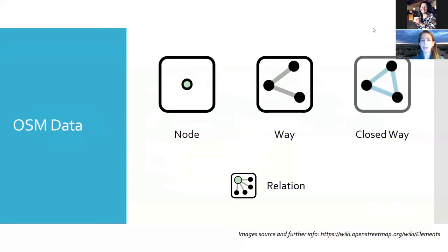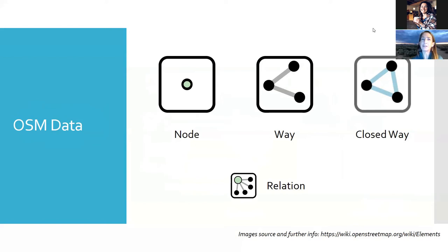So, OSM data — these are some images from the OSM wiki, which is amazing. Go in there, there are answers to all of your questions. If we're used to thinking about points, lines, and polygons in other geospatial data formats, OSM data comes in nodes, and then nodes related together make a way. Those can be a closed way, or a solid closed way to become a polygon. So it's a slightly different structure.